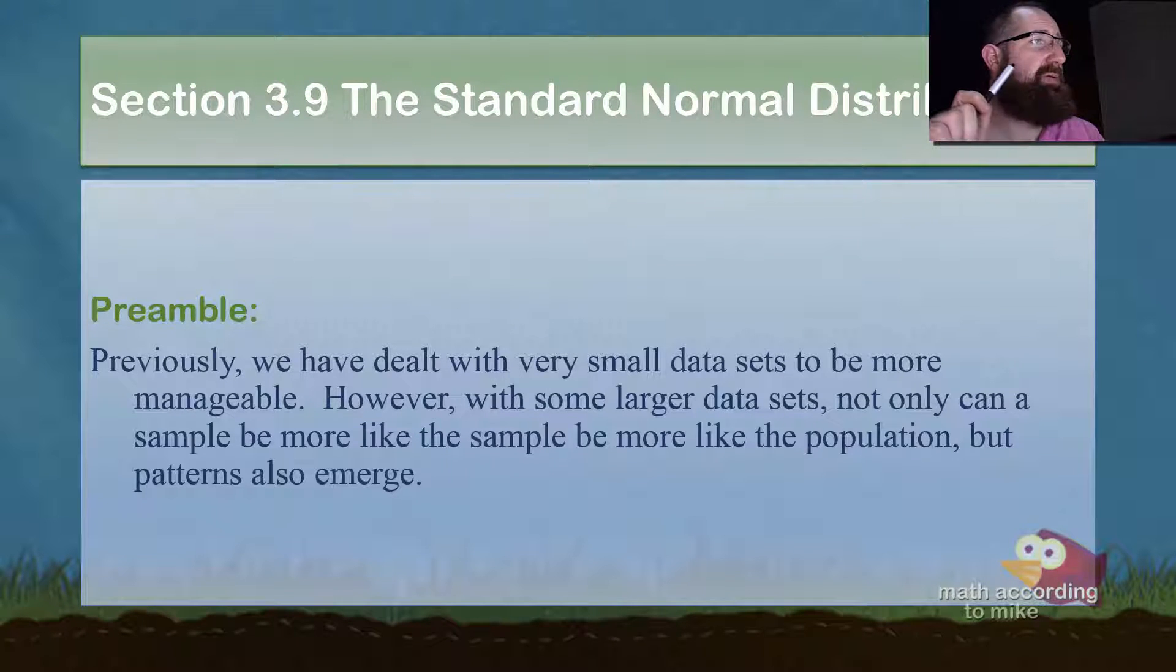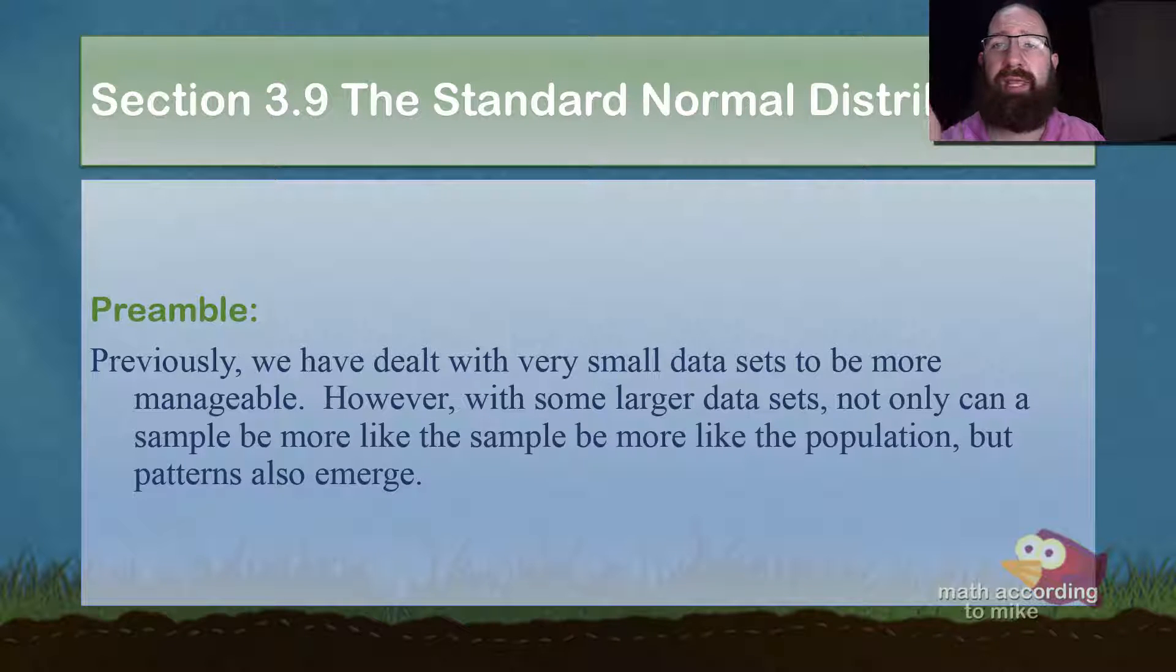Okay, as promised, we're going to skip to 3.9. The remaining part, the beginning part of 3, will do as its own chapter. 3.9 and 3.10, where it's going to follow chapter 2. 3.9, the standard normal distribution. Let me get my notes ready.